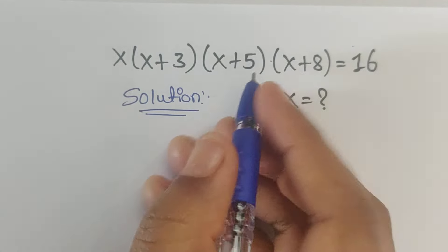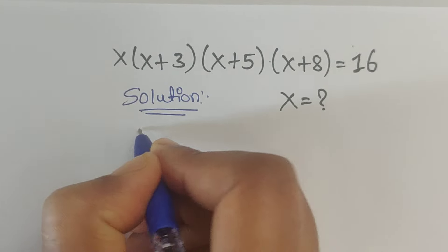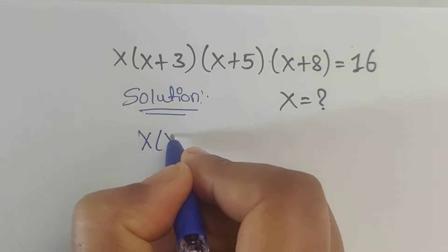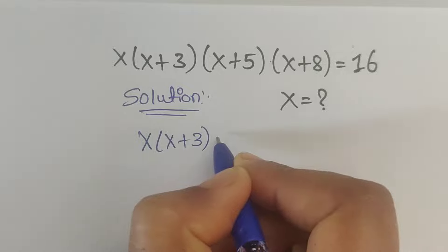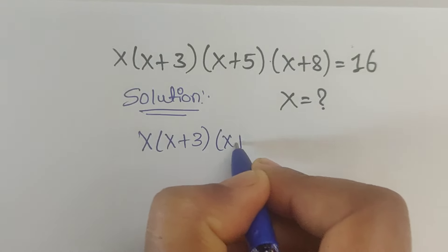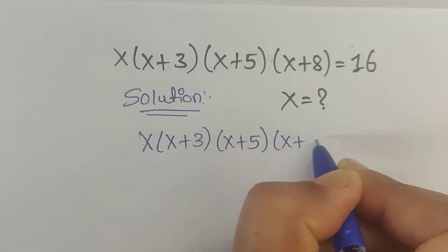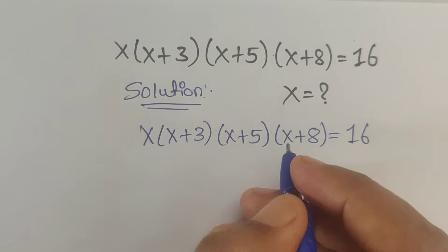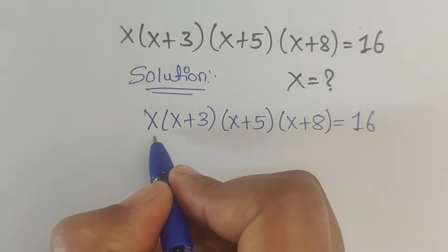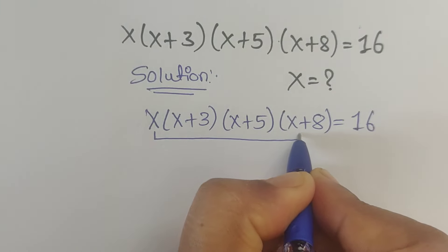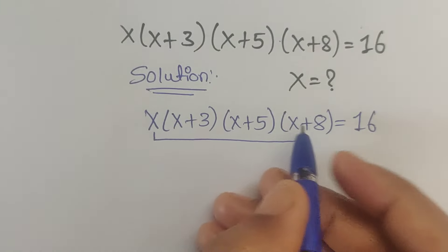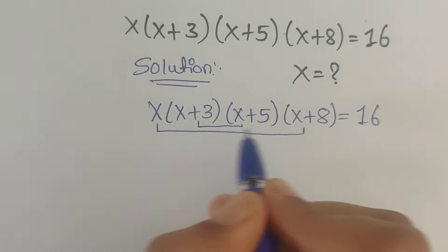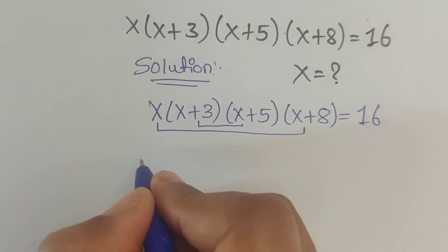We have given x times (x plus 3) times (x plus 5) times (x plus 8) equals 16. First we will multiply the first and last terms together, and then multiply the middle two terms. So first we will write these two factors together.